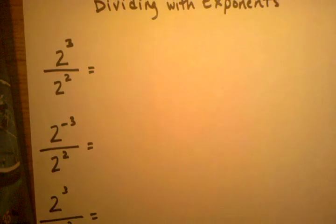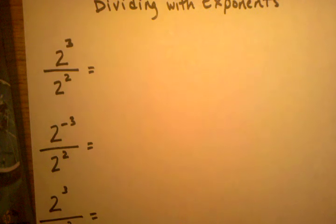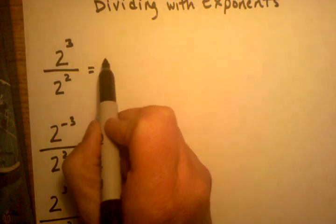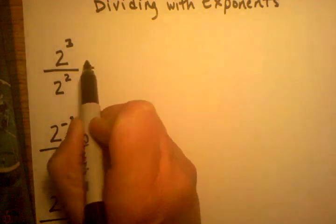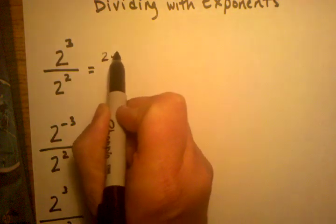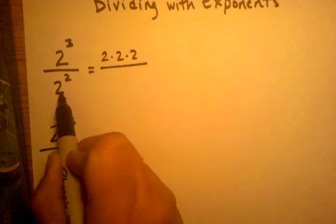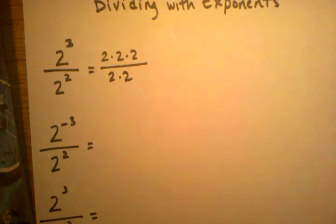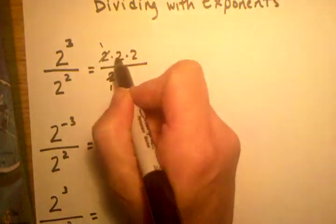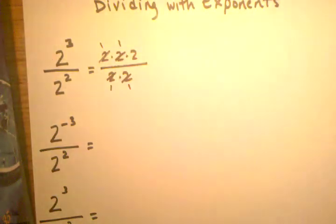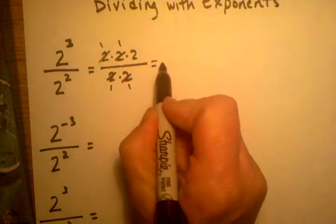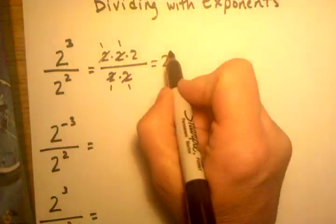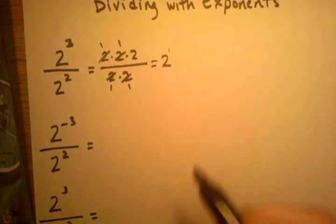Let's start with the first one. We'll start with the long way just so we can make sure we get the correct answer when we do it the short way. The long way would be literally writing out all the twos. So 2 to the third power is equal to 2 times 2 times 2, and 2 to the second power is equal to 2 times 2. Now that we see this written out as a fraction, we can start canceling out the twos, and our final answer is going to be 2, or 2 to the first power.